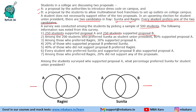We are given that 200 students preferred Sunita, so Sunita = 200 and Ragini = 300. Among the 200 students who preferred Sunita, 80% supported Proposal A, so 160 people in Sunita's circle supported A. Since a total of 250 students support Proposal A, the remaining 90 must come from Ragini's circle.